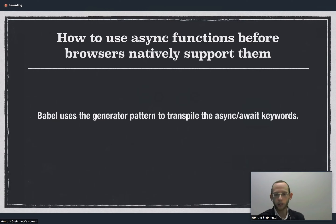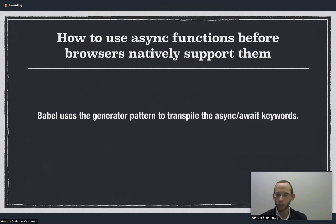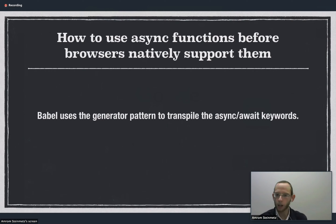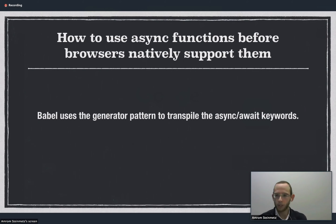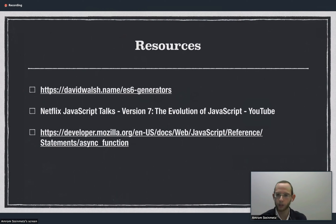Most browsers at this point do not natively support async functions since it's a pretty new feature, but Babel does have a plugin and a polyfill for it, which you can look up on the website to see exactly how to use. Babel actually uses that generator pattern we showed to transpile the async and await keywords. Here are some great resources on generators and async functions. That's my talk — thanks for listening.